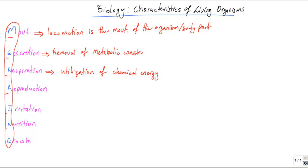Movement is the locomotion of the organism or part of the organism. For humans, it is basically walking or moving an arm or a leg. If a plant is in a room where half is dark and half is lit, the plant will eventually start growing towards the lit part, so even though the entire organism doesn't move, it moves in terms of its branches.